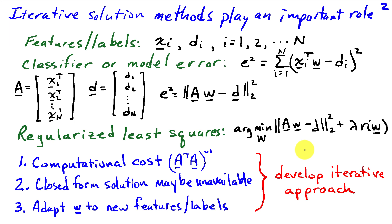Now why would we consider an iterative solution method? Well, there's multiple reasons that play a role. One is computational cost. It may be computationally prohibitive to try to find the inverse of A transpose A. Another is that for certain regularizers it may be impossible to find a closed form solution, but we can find a solution that will iteratively minimize this cost function. And lastly, in some cases we may be accumulating new features and labels over time and wish to adjust our solution in response to new information.